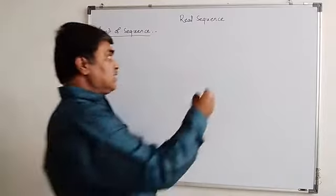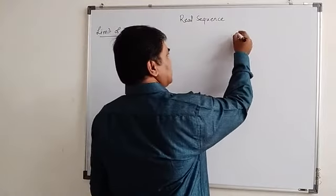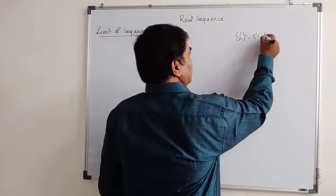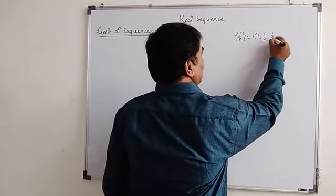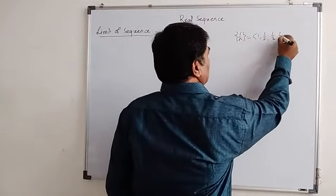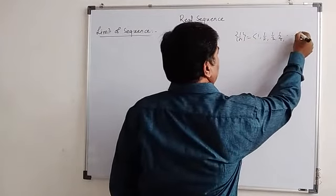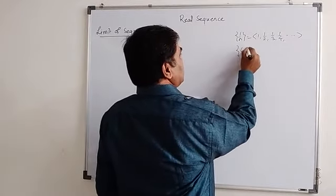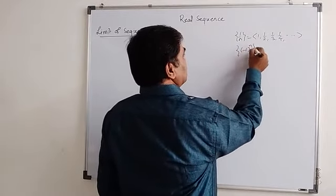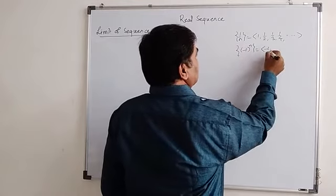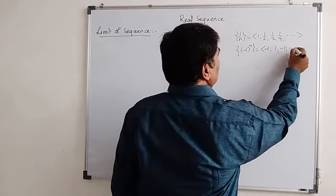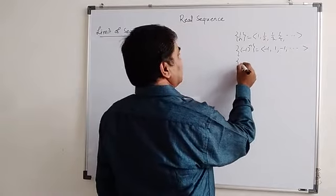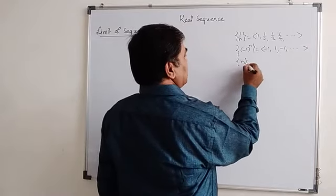For that, if I take the example say 1/n, which has elements 1, 1/2, 1/3, 1/4, and so on. If I take a second sequence, say (-1)^n, its elements are -1, 1, -1, and so on. And if I take say the sequence n, n equal to 1 to infinity.